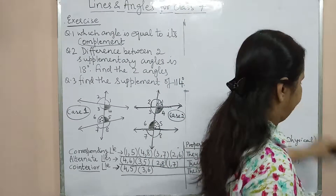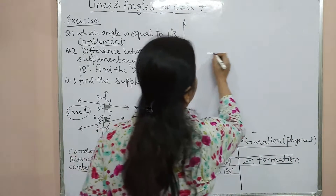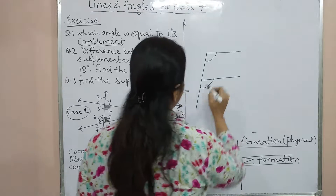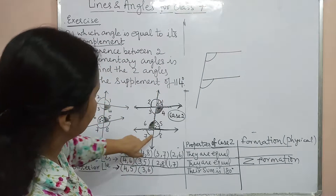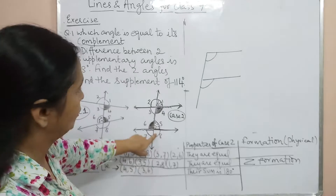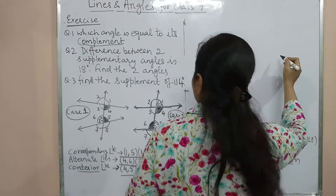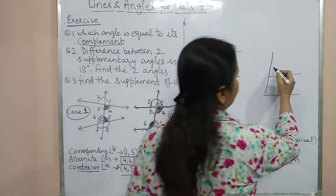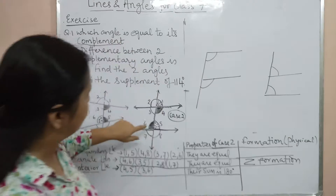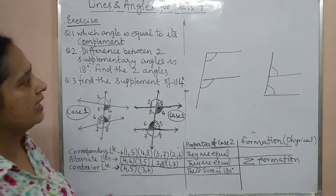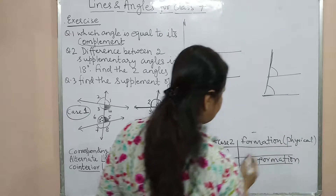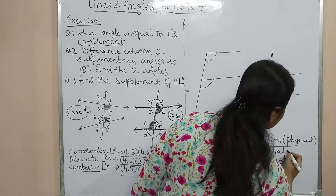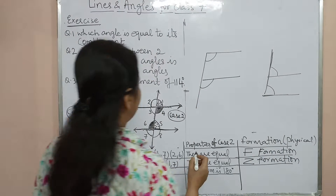For corresponding angles, use the F formation. If you see an F shape — whether normal or reversed — the two angles at the corners of the F are corresponding angles. For example, angle 4 corresponds to angle 8. The F formation helps you quickly identify corresponding angle pairs.